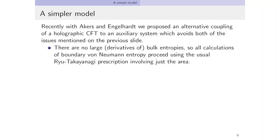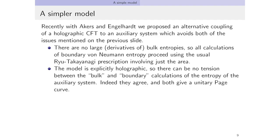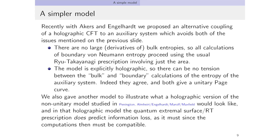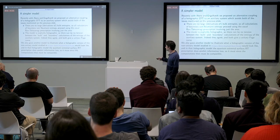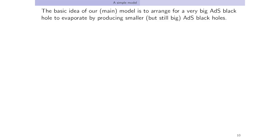In our model, there are no large bulk entropies — really it's derivatives of bulk entropies that matter — so you can do all the entropy calculations using just the area without worrying about bulk entropy. That makes it very simple: you can just look at the pictures and see what happens. Another advantage is that the model is explicitly holographic, so there can't be tension between the bulk and boundary calculations of entropy — they're going to have to agree. And they will: both are going to give a unitary page curve.